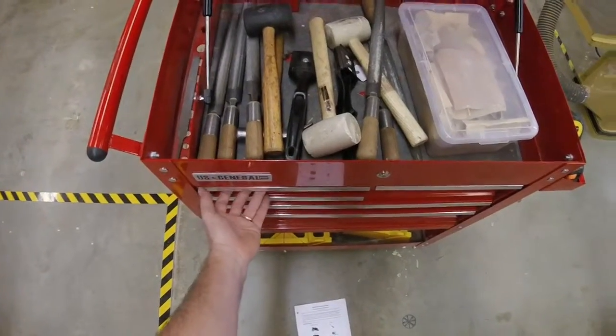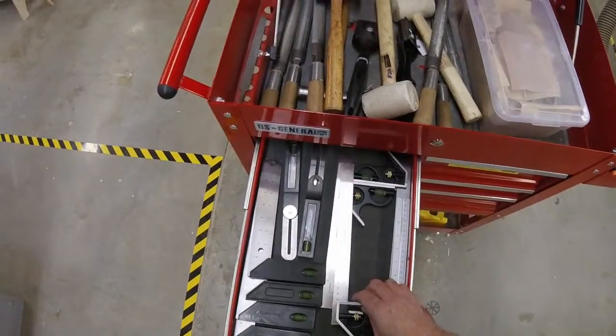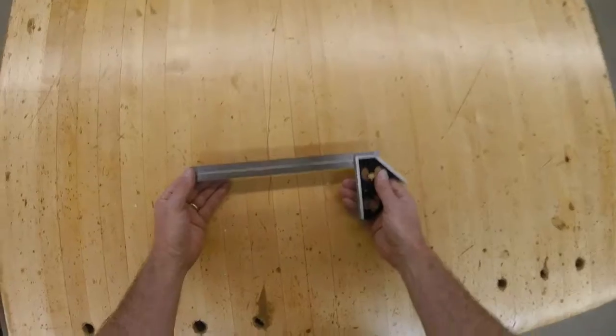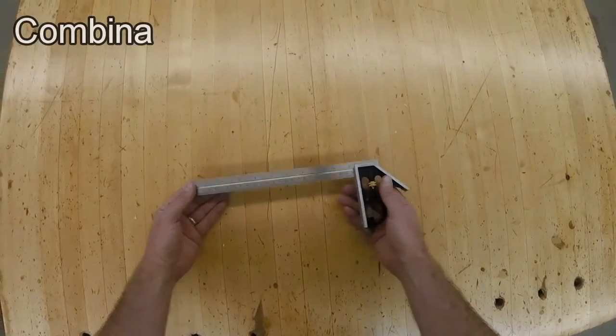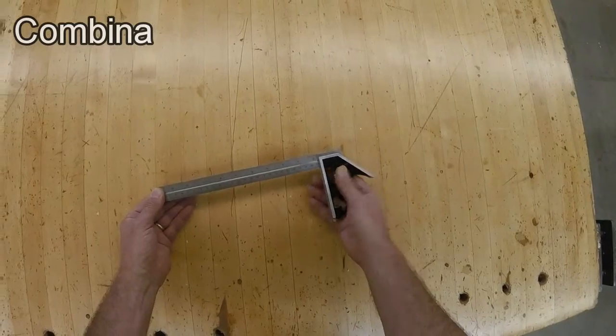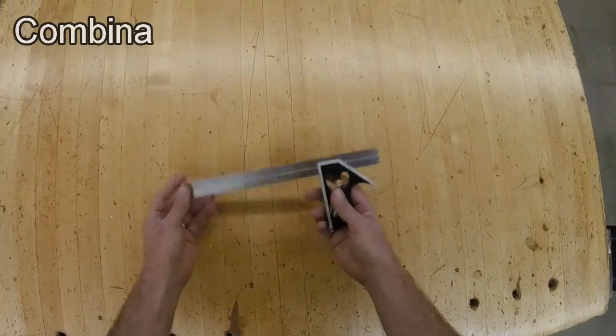One of the measuring tools we use, besides the measuring tape, is a combination square. We can use a combination square a number of different ways. It has this thumb screw right here. It allows me to loosen the blade and slide it back and forth.